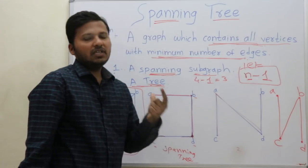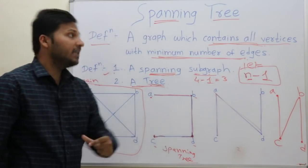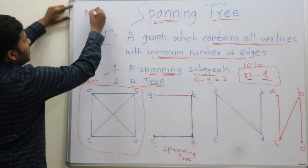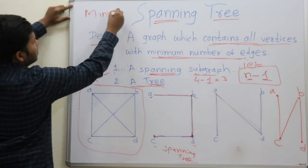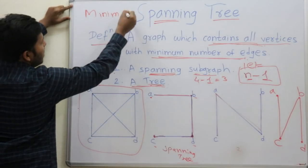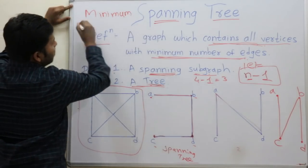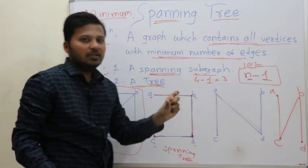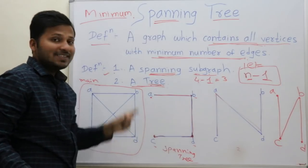The next concept is minimum spanning tree, also called minimal spanning tree. A minimum spanning tree is a tree or subgraph which has the total weight of the edges to be minimum.